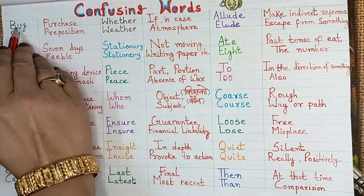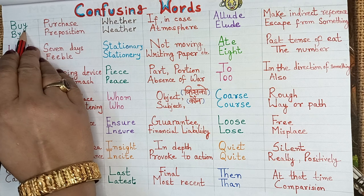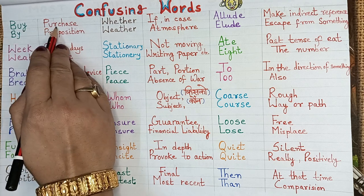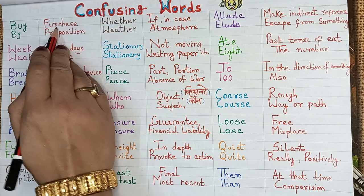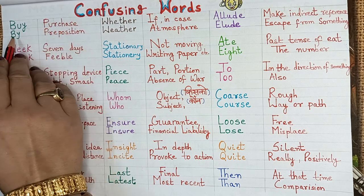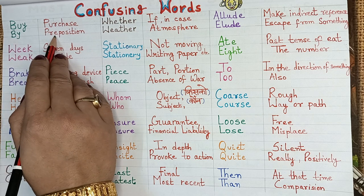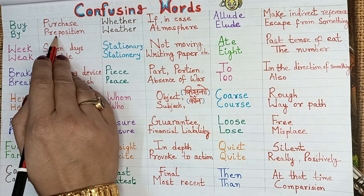B-U-Y — buy means purchase. B-Y — by means preposition.